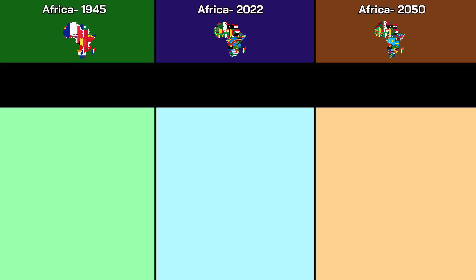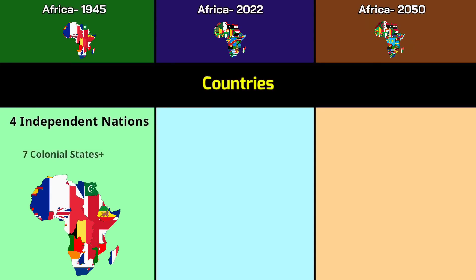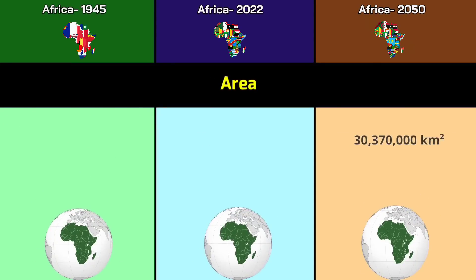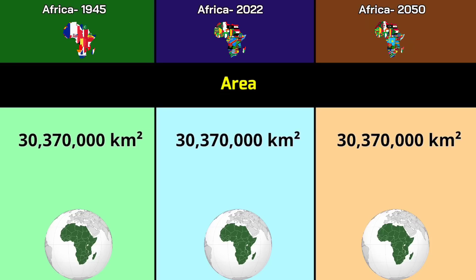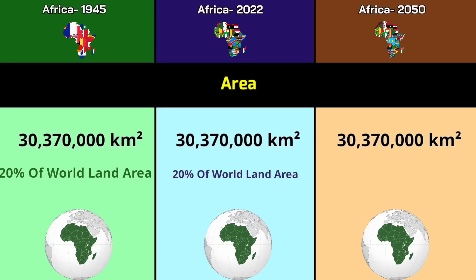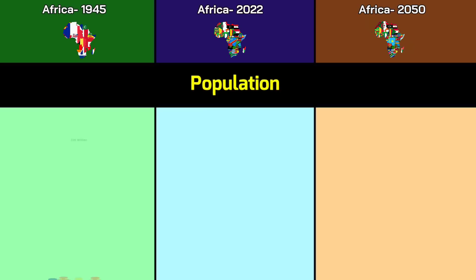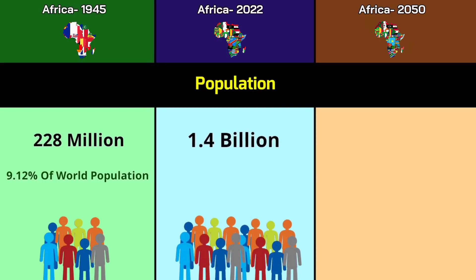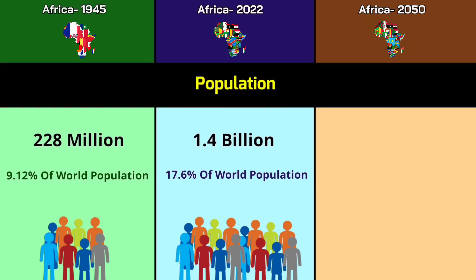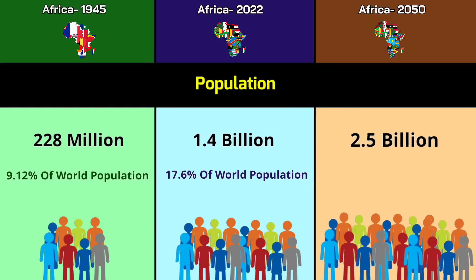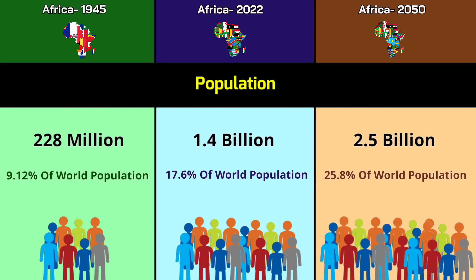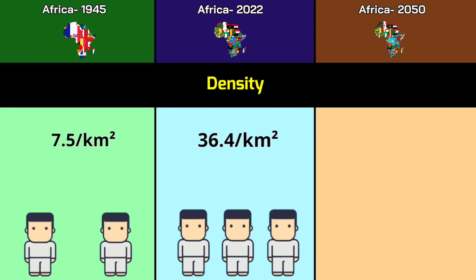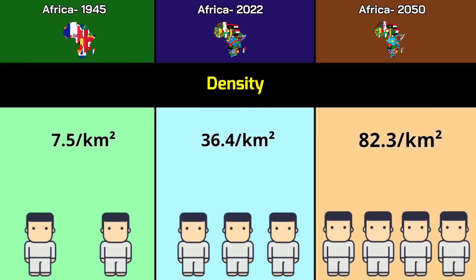Countries: 2 independent nations, 7 colonial constituents in 1945; 54 countries in 2022; 60 countries in 2050. Area: 30.37 million square kilometers, covering 20% of world land area. Population: 228 million (9.12% of world) in 1945; 1.4 billion (17.6% of world) in 2022; 2.5 billion (25.8% of world) in 2050.